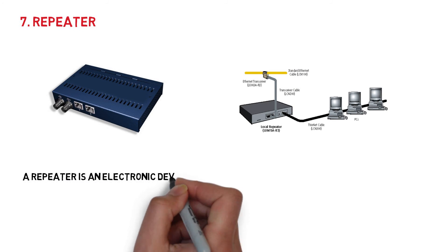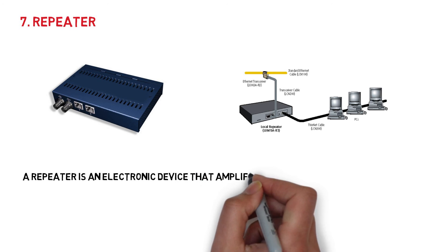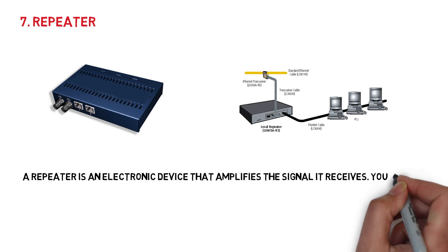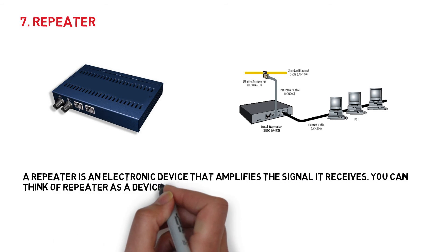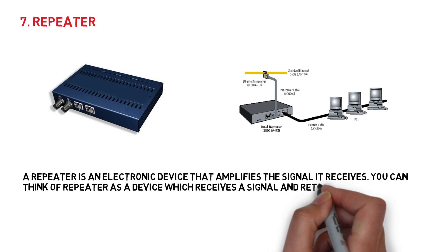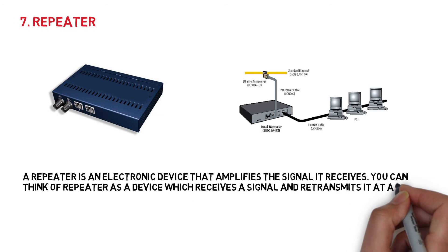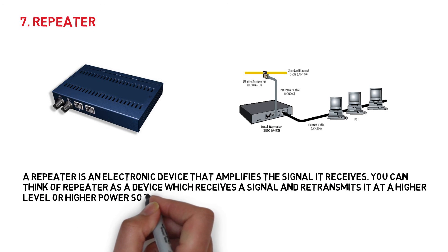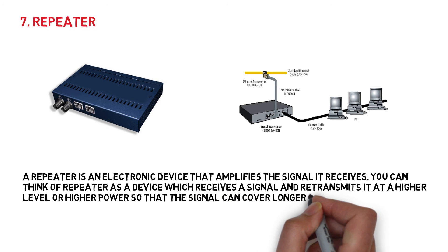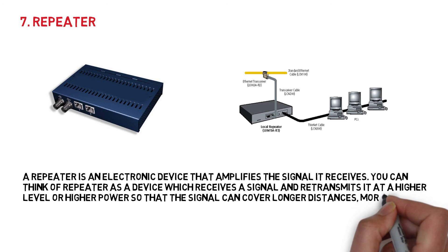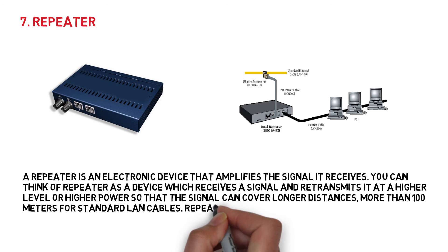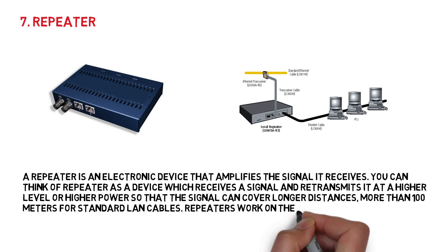7. Repeater. A repeater is an electronic device that amplifies the signal it receives. You can think of a repeater as a device which receives a signal and retransmits it at a higher level or higher power so that the signal can cover longer distances, more than 100 meters for standard LAN cables. Repeaters work on the physical layer.